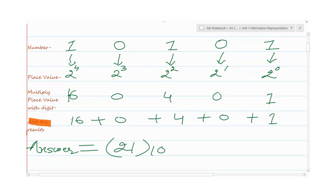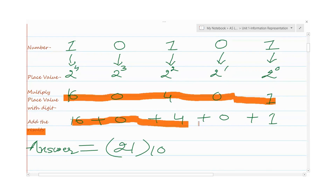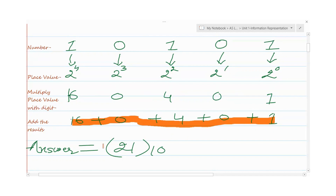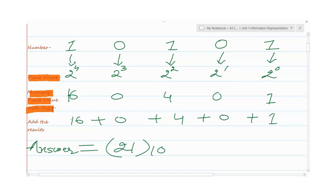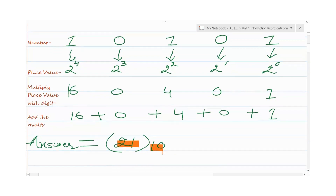After multiplying each place value with its respective digit, we add the results. So 16 plus 0 plus 4 plus 0 plus 1 gives us 21, and that is our denary number. To summarize: write the number, write the place value of each digit under it, multiply each place value with its digit, then add the results — that gives your denary number.